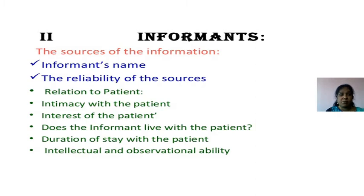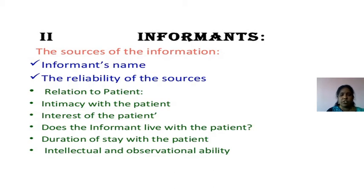Next, informants — who is the first informant. We will be seeing the source of information: informant name, whether it is a reliable source, relation of the patient, intimacy with the patient, interest of the patient, whether the informant lives with the patient, duration of stay with the patient, and intellectual and observable ability. These are the details to collect from the informant.